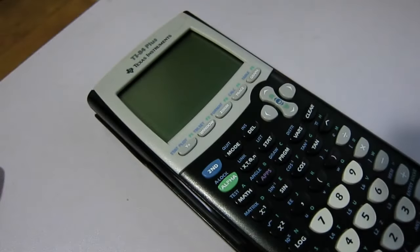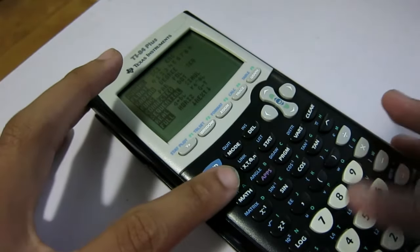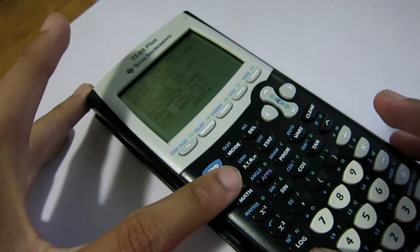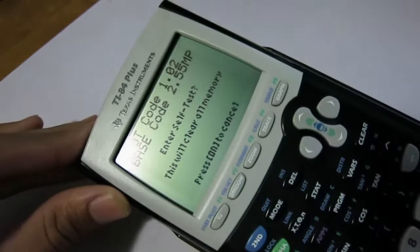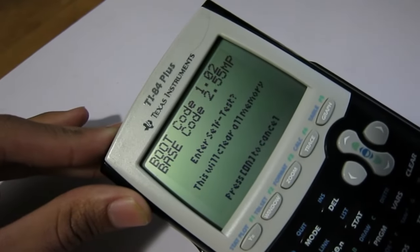Before we can begin flashing NiteOS onto our calculator, we need to make sure that the calculator has the supported boot code. It needs a boot code of 1.02 or older in order for it to work well. The way that you can check the boot code is you press Mode, then Alpha, and then S, and it will show you the boot code at the top. If boot code is 1.02 or lower, then you should be good to go.